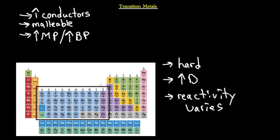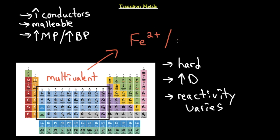Transition metals are also multivalent, meaning they can have multiple charges. For example, iron can have a two-plus charge or a three-plus charge, depending on whether it gives up two or three electrons. This will be discussed in great detail in the coming lectures.